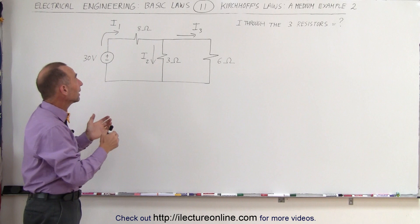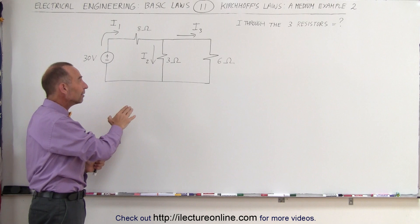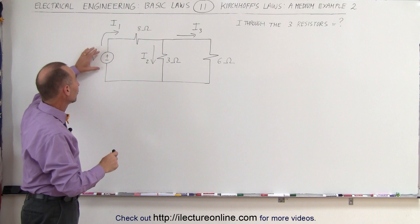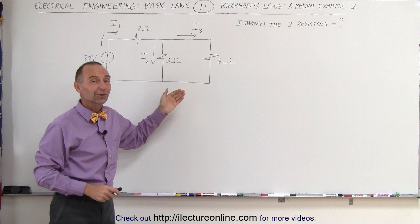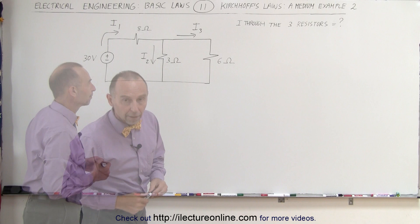Now we could be wrong here — it could be that the direction of the current is opposite to what we drew. But that's quite alright; if we are wrong, we'll end up with a negative answer, which indicates the current was drawn in the wrong direction. Although with the voltage source having the positive end on this side and the negative end on this side, we can be almost certain that the current will be in this direction as we have drawn.